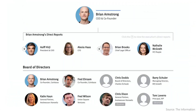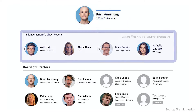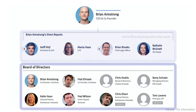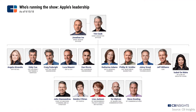Here's an org chart of the leadership team at Coinbase. It breaks down the CEO, his direct reports, and the board. Here's another one for Apple. It might be a few years old, but it's useful to see who's leading the company's top departments.